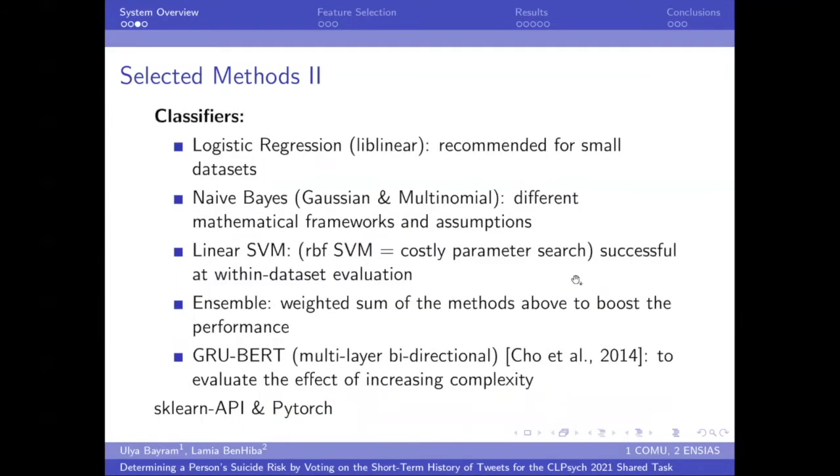As classifiers, we selected these methods: logistic regression, the lib-linear version, because it was recommended for small datasets. And we selected two Naive Bayes classifiers, Gaussian and multinomial, because they have different mathematical frameworks and assumptions. We selected linear SVM because it was successful within dataset evaluations.